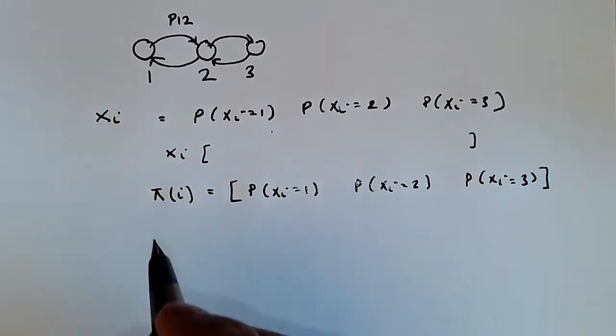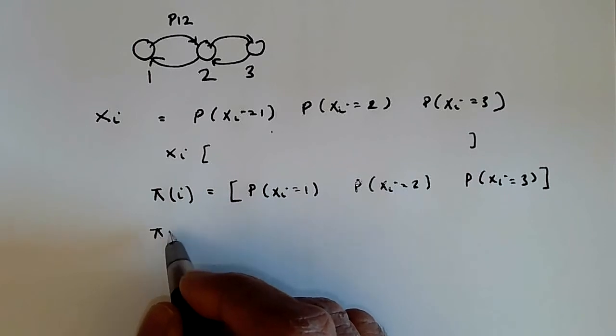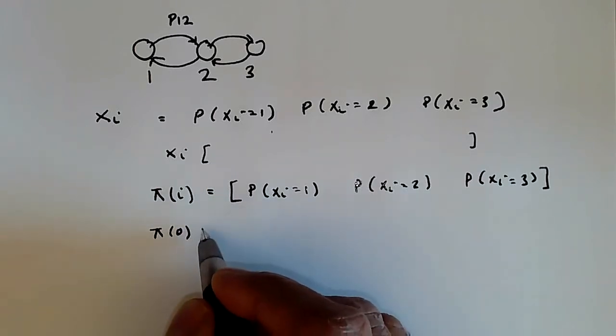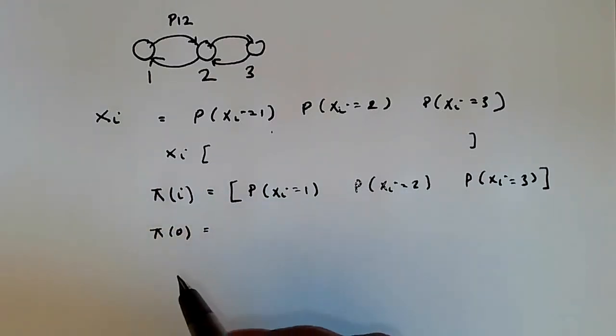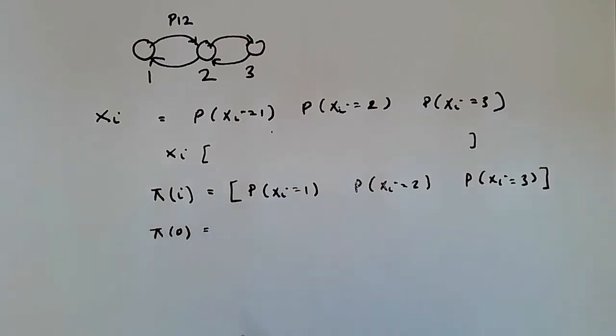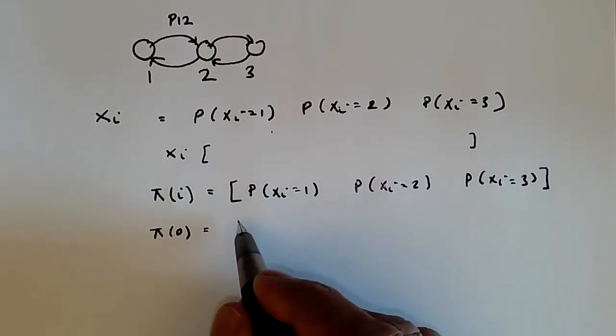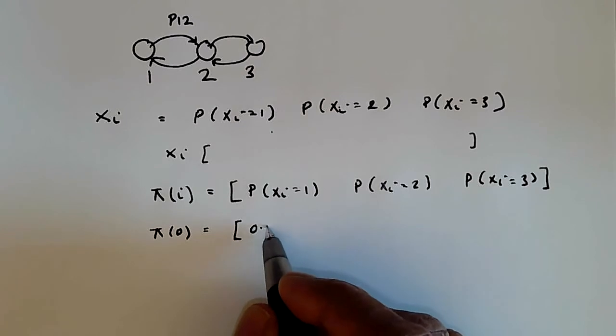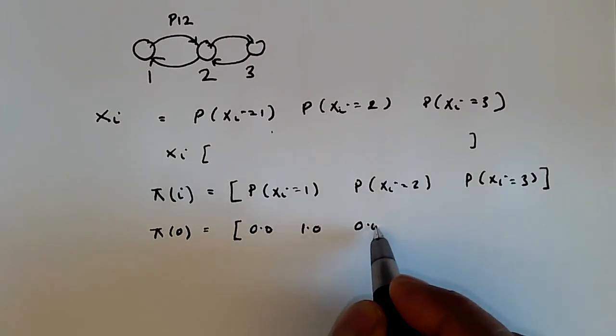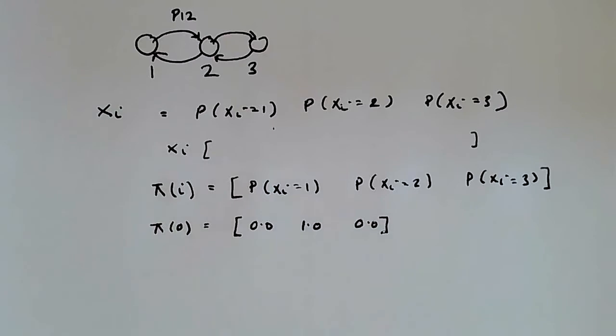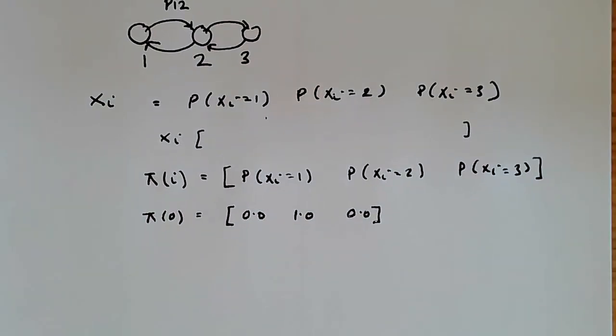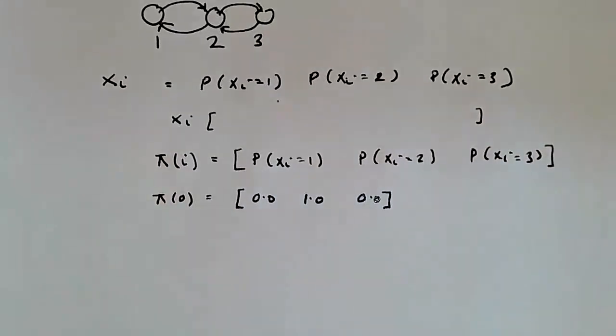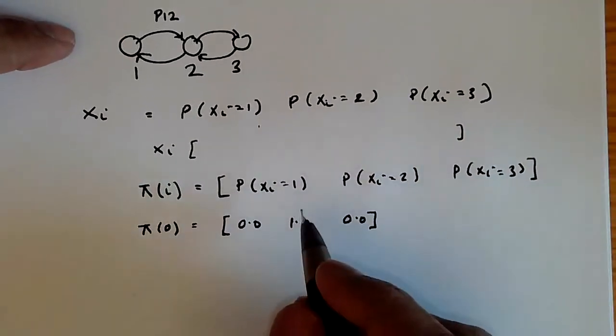And we'll assume that π_0 is the initial probability distribution. And so, for example, if we want to say that the Markov chain always starts at state 2, we'll write it like this: [0.0, 1.0, 0.0]. And this means exactly that the Markov chain has probability 1 of being in state 2 at time 0, which is the initial time.